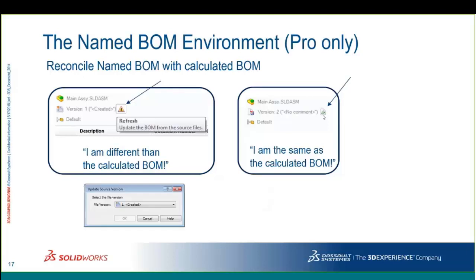A word of warning: if you deliberately hid a part in a named bill of materials and then hit the refresh button, PDM will notice that part is missing and bring it back. So if you purposely removed entities from your named bill of materials, they'll come back when you refresh. I wish there were a way to hide a part and prevent it from coming back unless you explicitly say so — because maybe you hid it for a reason, like you don't want to buy it. But other than that, named bill of materials are really useful.